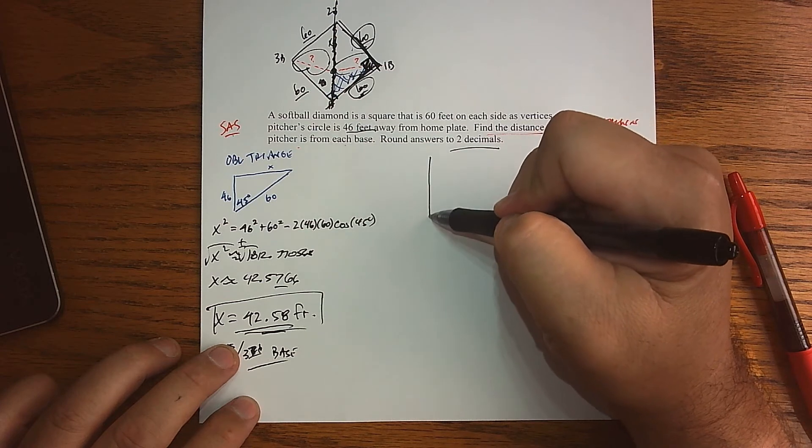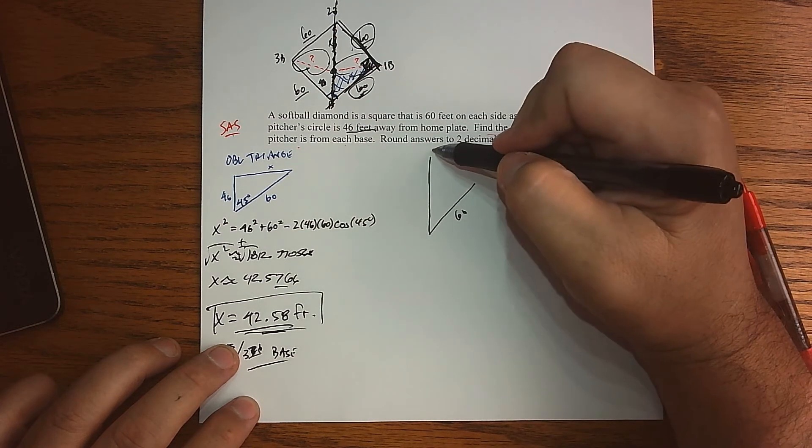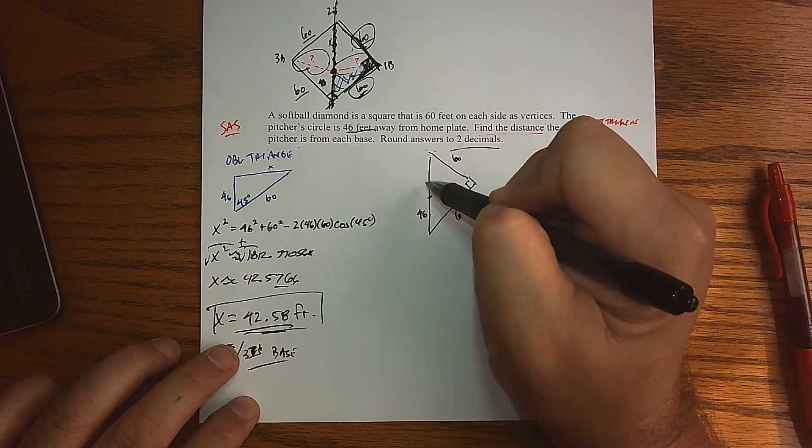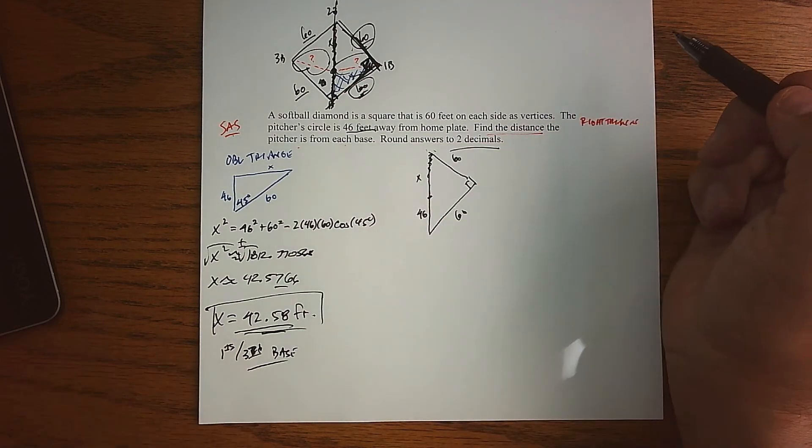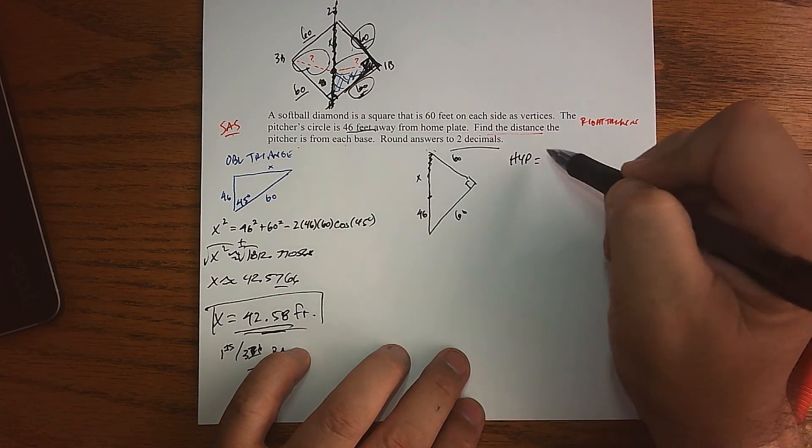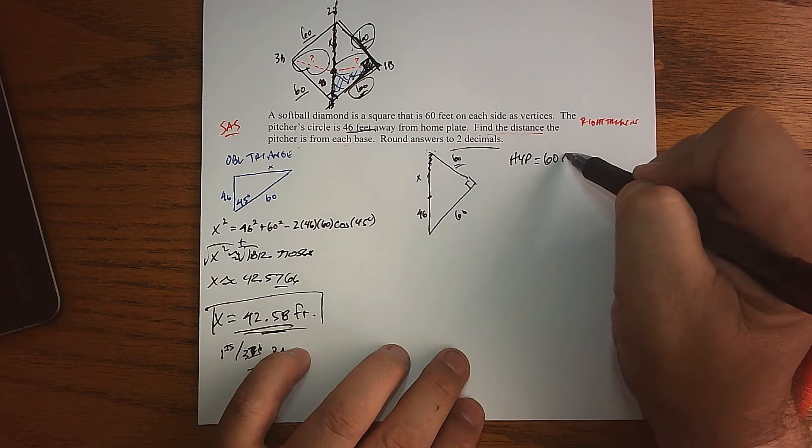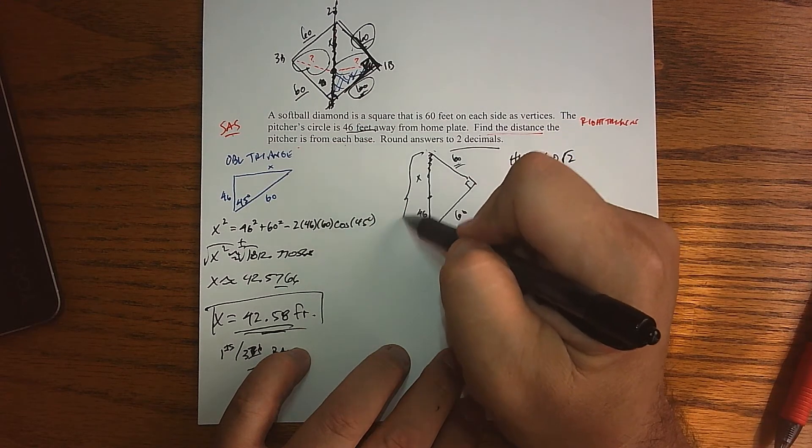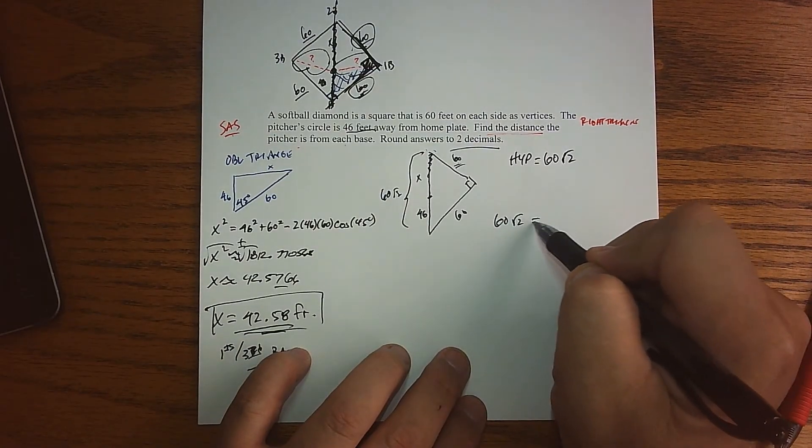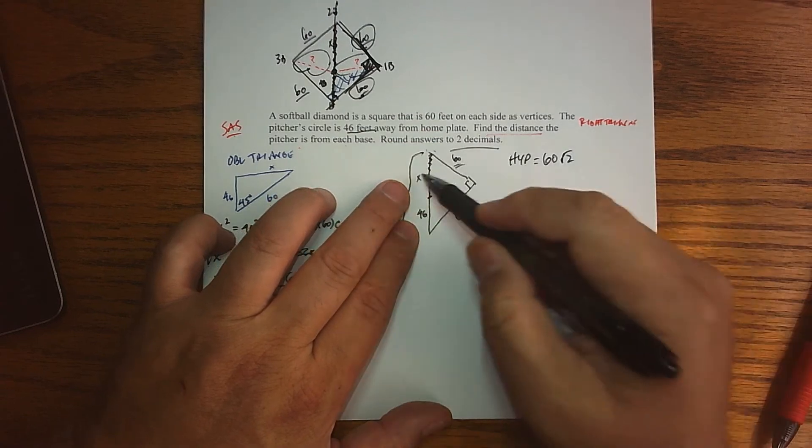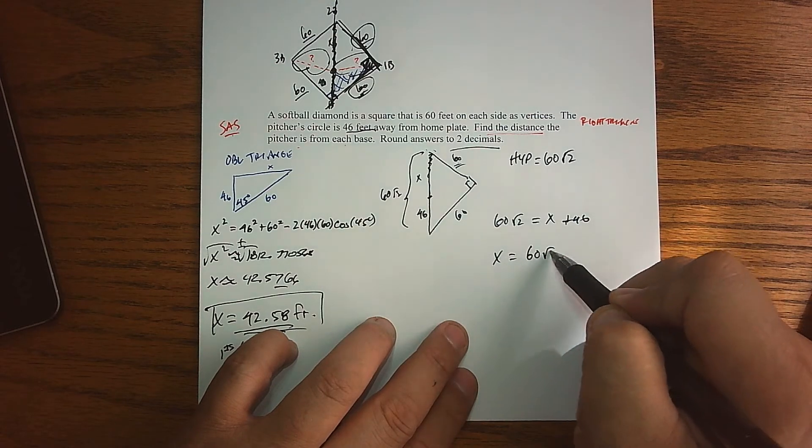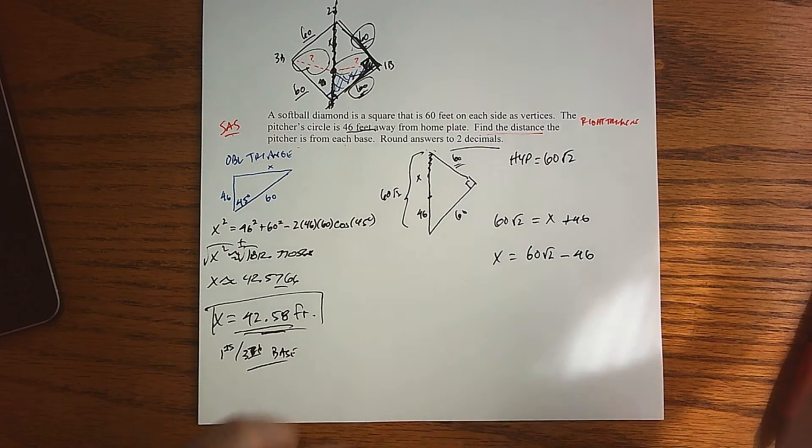So let me redraw that. We're basically looking at here's 60, here's 60, that's a right triangle, and I know this is 46, and the side we're looking for is x. If we go back, we know that for a right triangle, the hypotenuse is whatever my distance is times the square root of 2. So this whole hypotenuse is 60√2. So that means that 60√2 is whatever my x is plus the known distance of 46. So x is 60√2 minus 46.